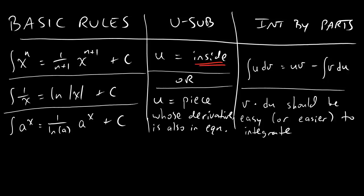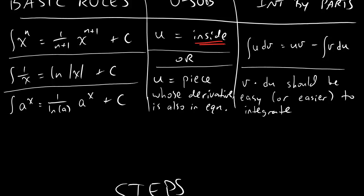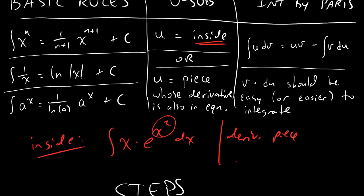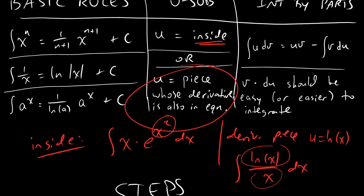If you're doing u-substitution, you're going to look for one of two things. Either there's going to be a piece of the function that you're integrating that has an inside, or you're going to see a piece whose derivative is also in the equation. And so dudes, just to remind you, if you're looking at a function where there's an inside, it might be something like integral of x times e to the x squared. Notice that we actually have an inside here, and that inside is the x squared part. So that's the inside. But dudes, you can also have one where you have like the derivative piece. Let's say you have something like the integral of natural log of x over x. Turns out this is a great u-substitution problem, but it doesn't look like it, because there's no inside to this. All we have is a fraction, and there's no real composition going on. But dudes, it turns out that the derivative of ln is 1 over x, and so the right thing to do is to set u equal to ln of x. So that's what the second rule right down here says. If you can see a piece whose derivative is also in the equation, that should be your u.